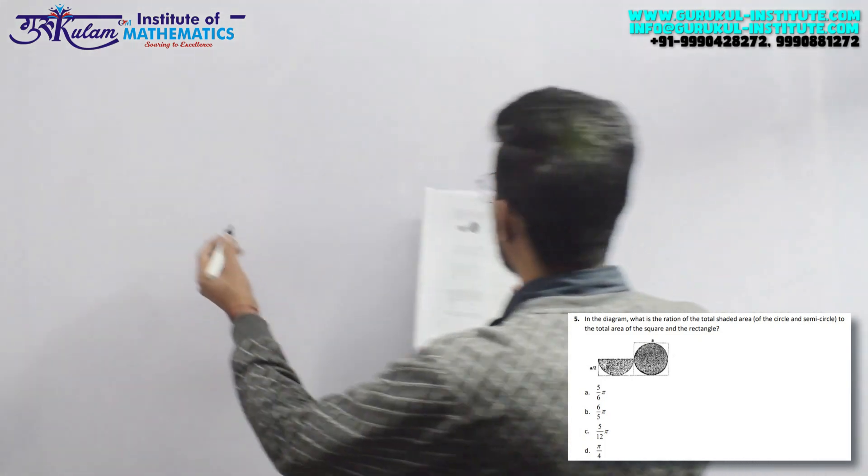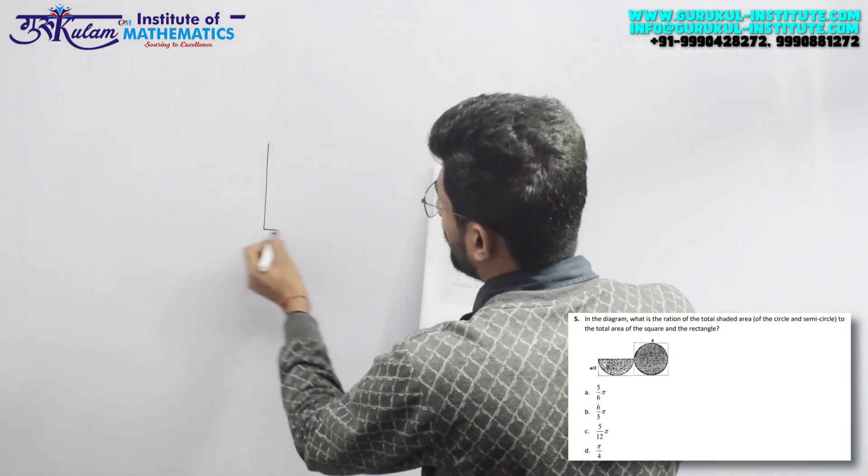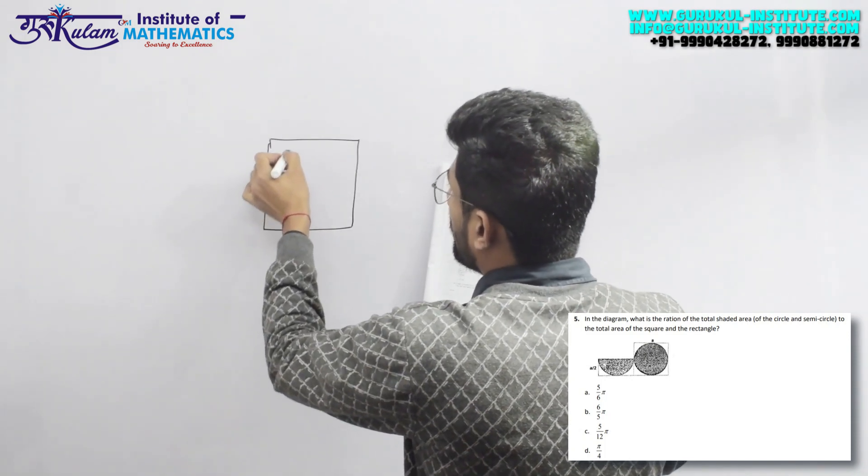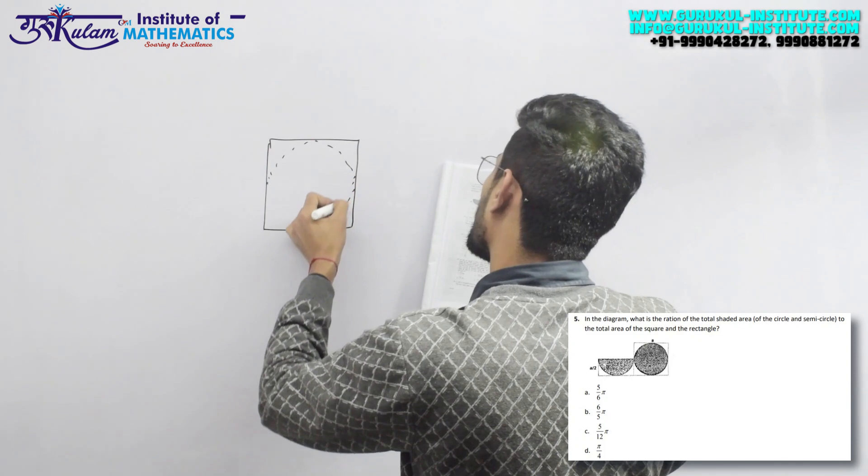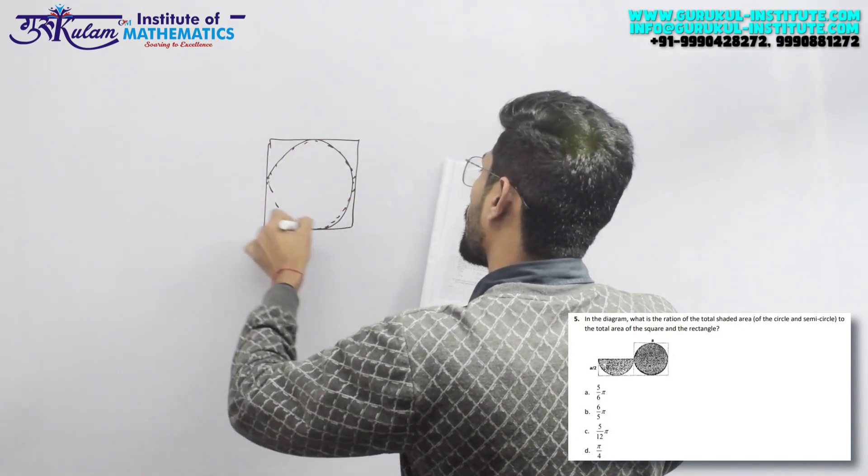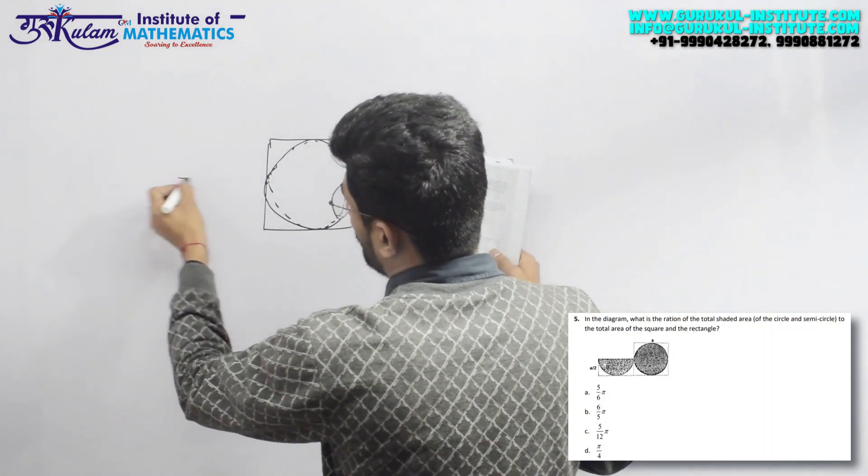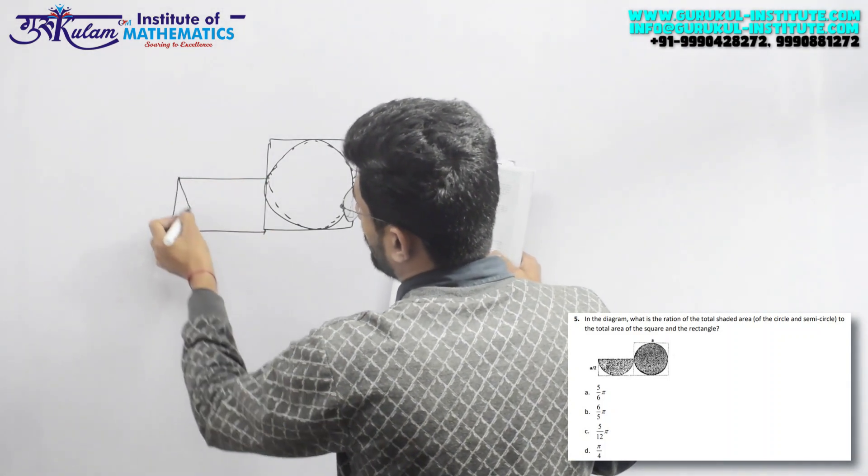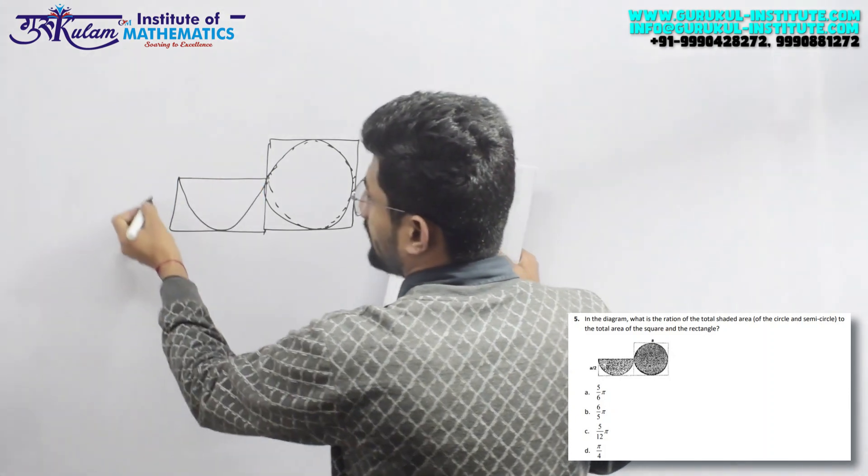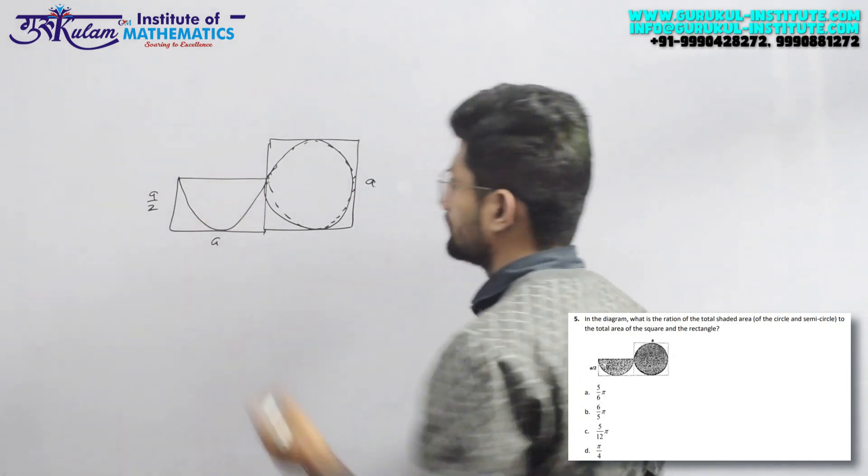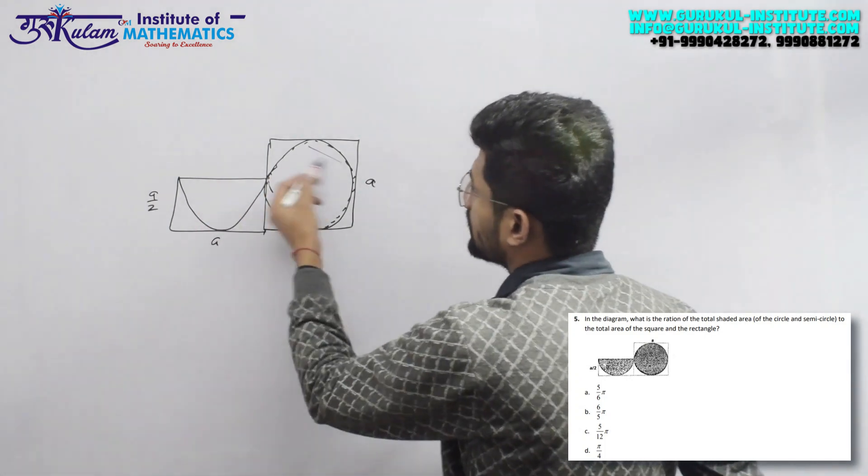In the diagram, there is a rectangle, which is a semicircle and the length is a by 2. And this is the circle. So this is the circle.